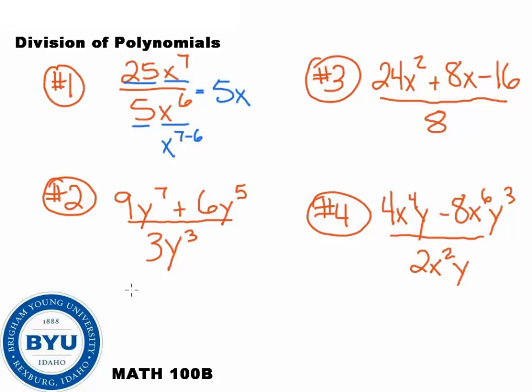On number 2, we're going to separate this polynomial into separate polynomials. We're going to divide each of the top parts by the bottom part. So 9 divided by 3, that comes out to be 3. And y to the 7th divided by y cubed comes out to be y to the 4th. Plus 6 divided by 3, that's 2. And y to the 5th divided by y cubed, we subtract those, we get y squared. Again, when you're dividing powers, subtract the exponents.